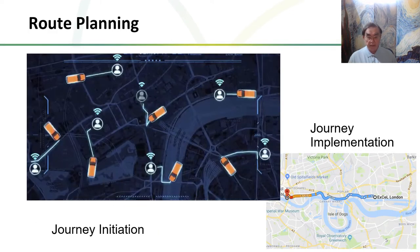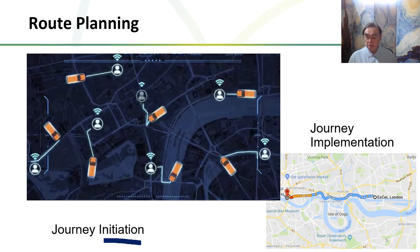Route planning: how do we get from here to there? Which driver do we route to which customer? That's the journey initiation — matching cars to customers. Then there's the journey implementation: how we go from the beginning to the end of the trip, and how we fold in traffic dynamically. Companies like Uber and DiDi have a lot of traffic information and can reroute their cars around incidents, whereas individual drivers find it much harder to do that.